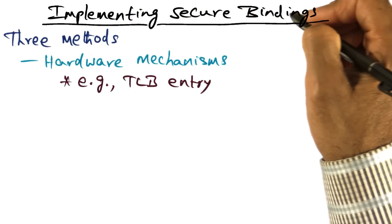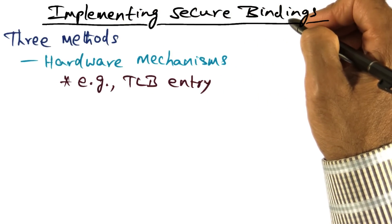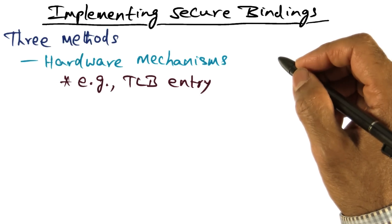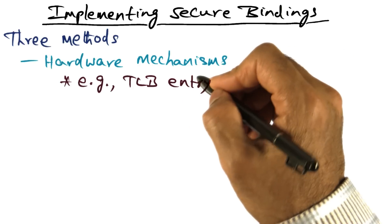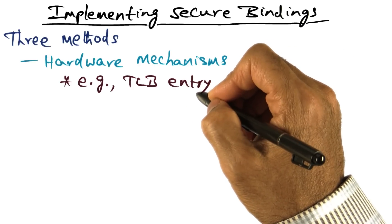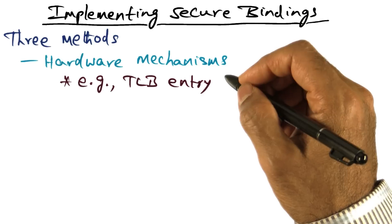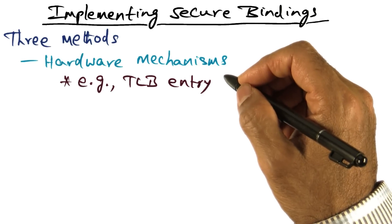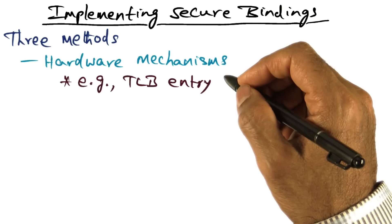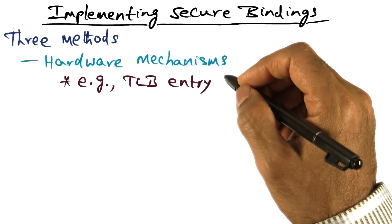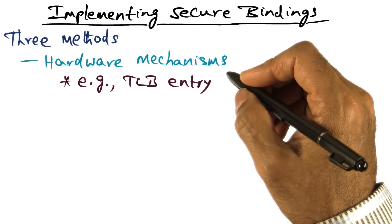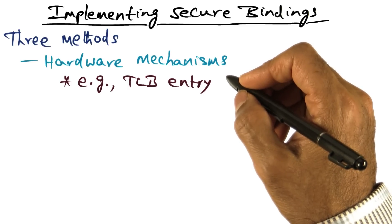Now let's talk about the mechanisms in exo-kernel for implementing secure bindings. There are three methods. The first method is hardware mechanisms. Examples include a TLB entry, getting a physical page frame from exo-kernel, or a portion of the frame buffer used by the display. These are all examples of specific hardware resources that can be requested by the library operating system and bound to that library operating system by exo-kernel and exported as an encrypted key.